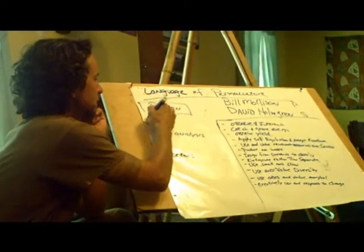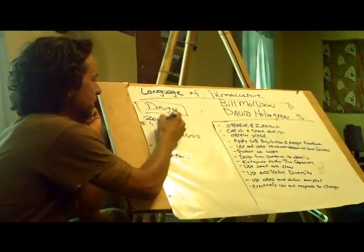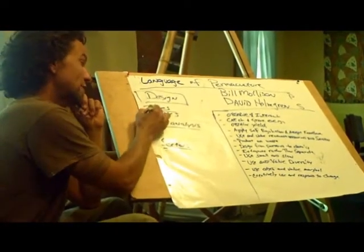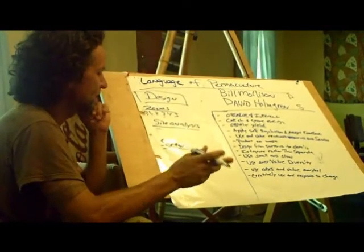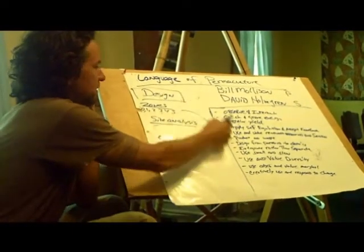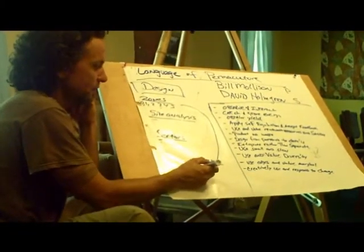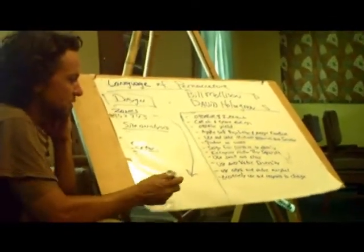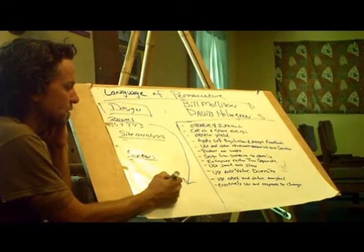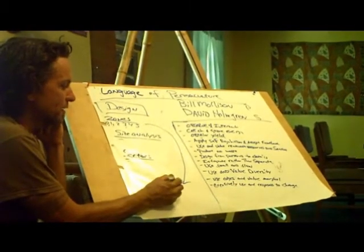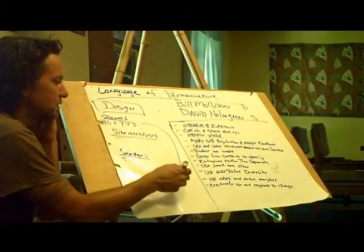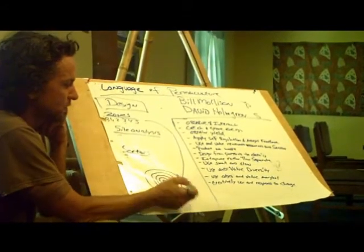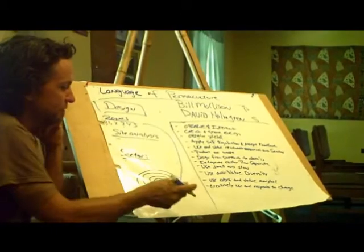So zones — one, two, three, four, five. They make it really easy. Actually, there's zone zero too. It's just trying to give a description of efficiency. This is taught in a circular manner, even though no piece of property is circular. This little dot in the middle is the house — that's zone zero. You go out, that's zone one. Further away, zone two. Further, zone three. Further out, zone four. And further still, that's zone five — zone five is nature.